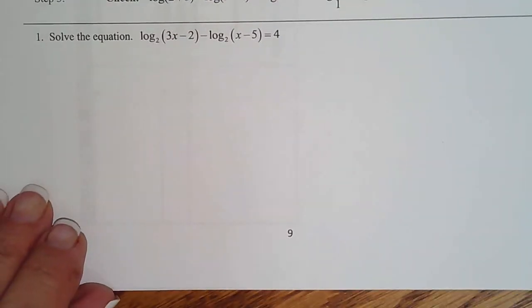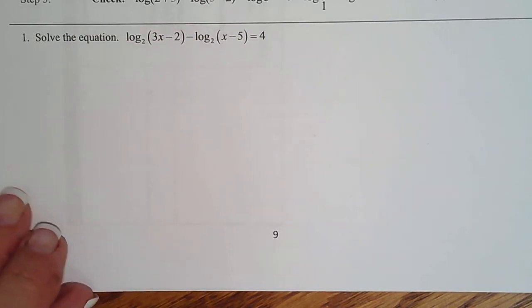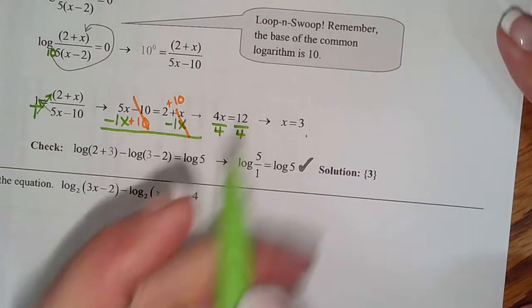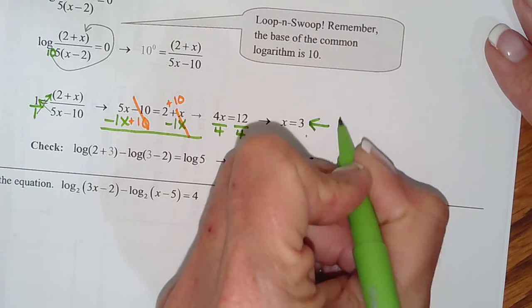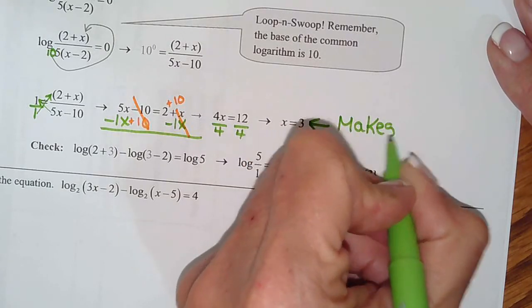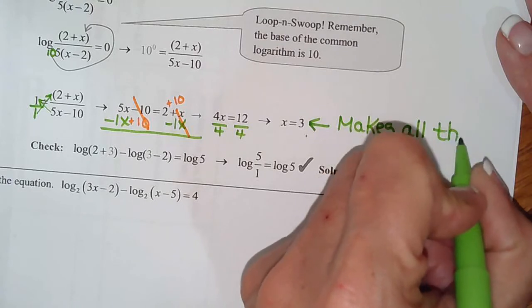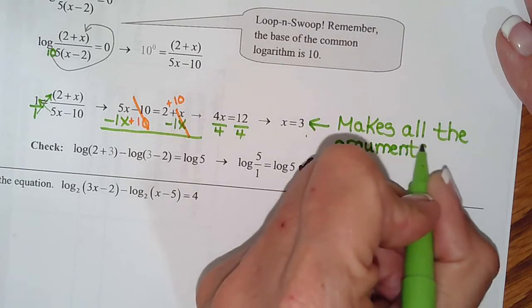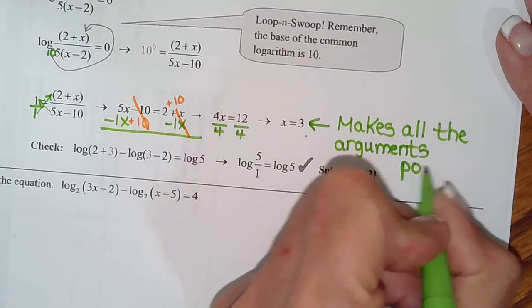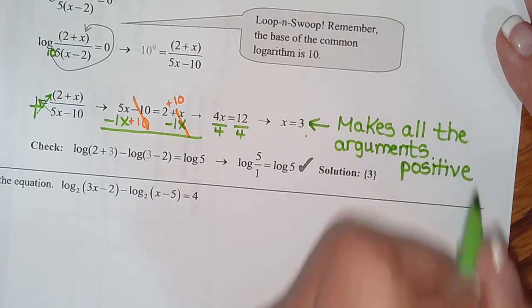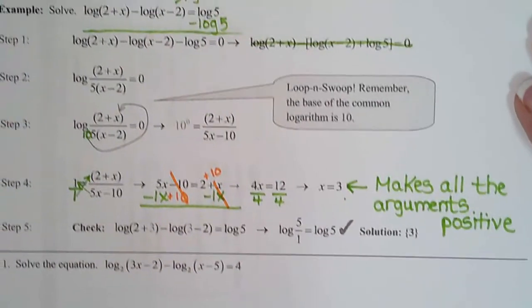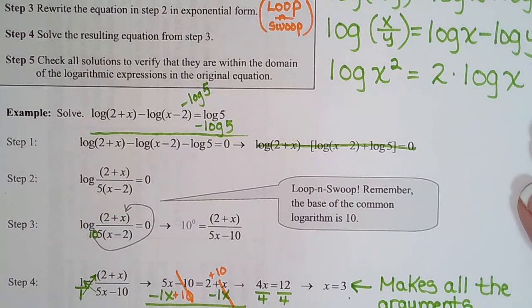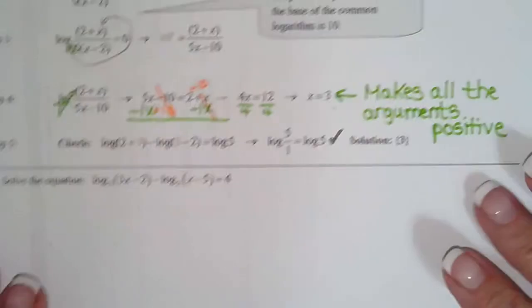Let's try one on our own. Make a note that x equals 3 is a solution because it makes all the arguments positive — that's why we chose it as valid. You plug it in everywhere you see an x in the argument, and as long as it makes all the original arguments positive, you can choose it as a valid solution.